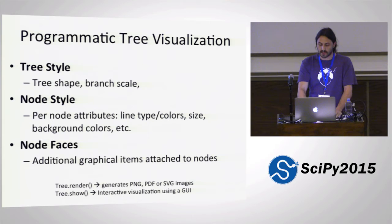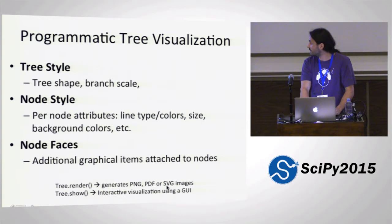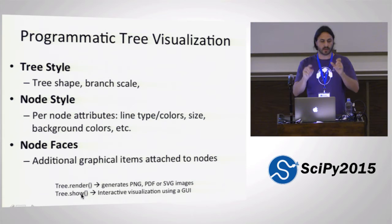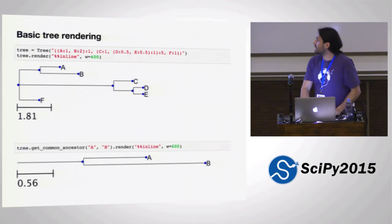Basically, a face is a graphical item that can be attached to individual nodes. These faces are going to be automatically arranged in the correct position, avoiding overlaps, just by the layout function implemented in ETE. The tree visualization framework is perfectly integrated with the tree class — actually rendering a tree is simply a matter of calling the render function. Calling tree.render will get you an image in PNG, PDF, or SVG format. It also provides the ability to interactively browse the tree. The same image you get with render, you can get with show, but within a graphical user interface where you can click and explore.